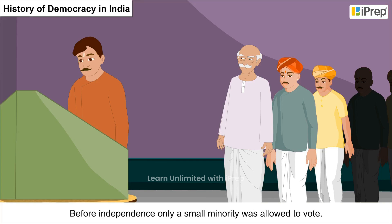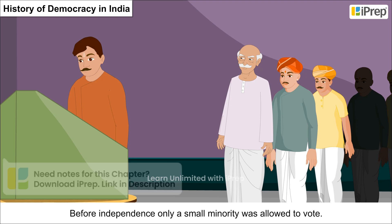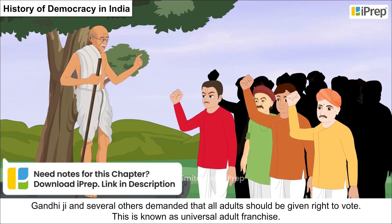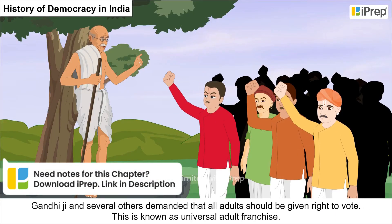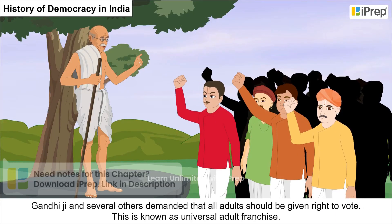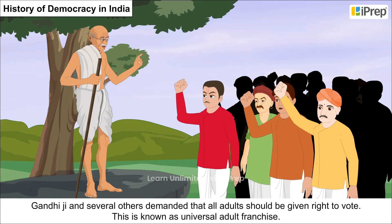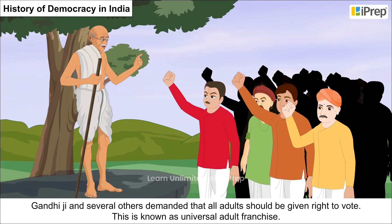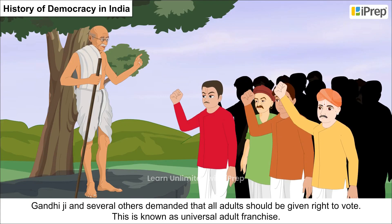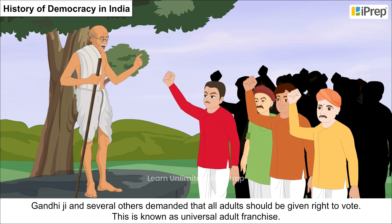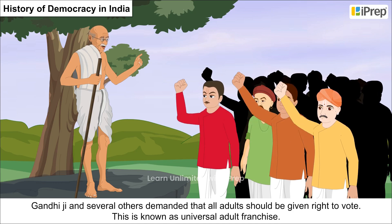Before independence, only a small minority was allowed to vote. Gandhiji and several others demanded that all adults should be given the right to vote. This is known as universal adult franchise.